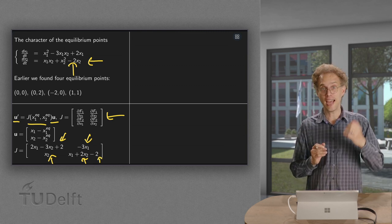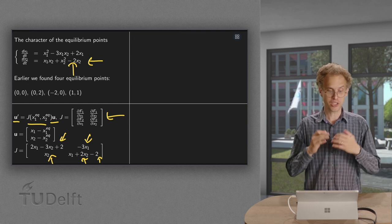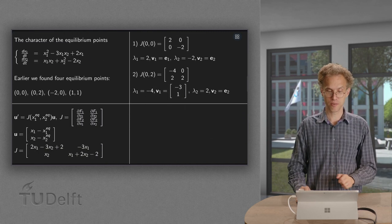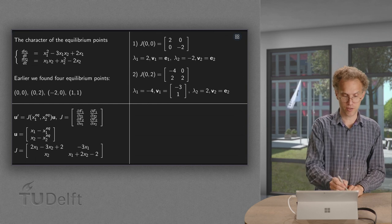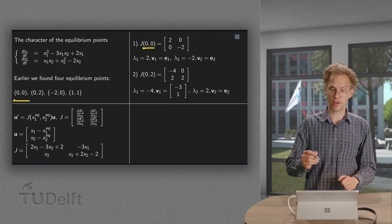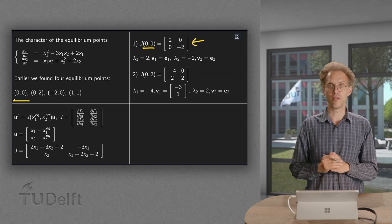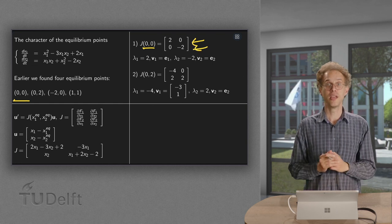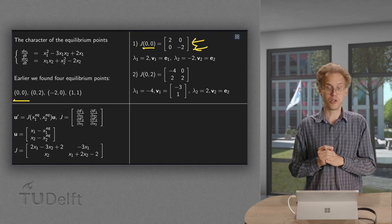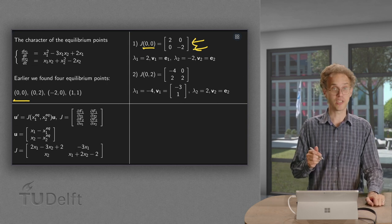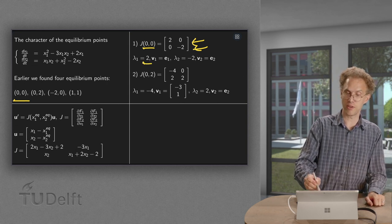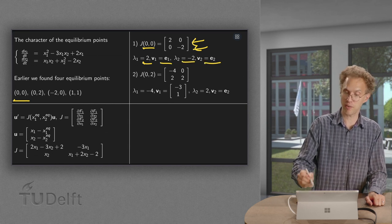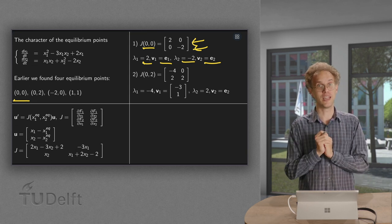And then for each equilibrium point we have to see how the matrix looks. So first we plug in the first point (0,0). In (0,0) we have the following matrix. So we have a system of the form U' equals J times U with the J over here. Well we can immediately read off what the eigenvalues are. So 2 is an eigenvalue with eigenvector (1,0), -2 is the other eigenvalue with eigenvector (0,1). And we are done immediately because we have a diagonal matrix.